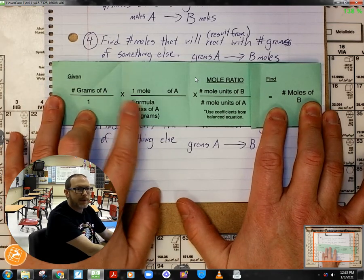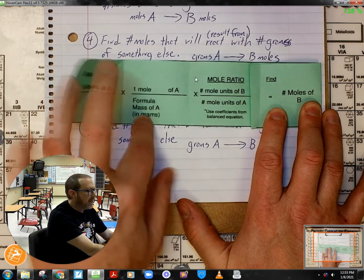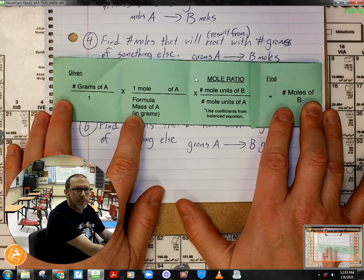And so here, in this first step, I'm going to put one mole of A on top, the molar mass of A, which will change to moles. And then I multiply by my mole ratio to get moles of B.